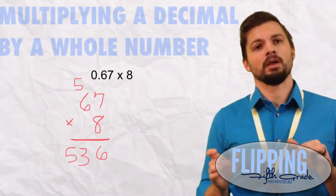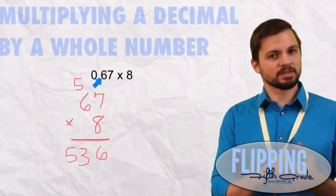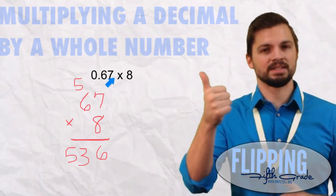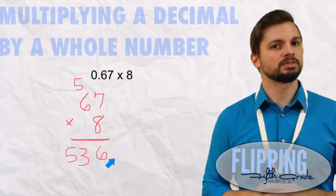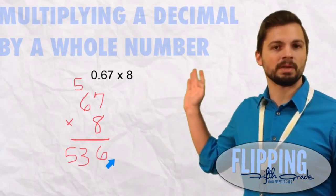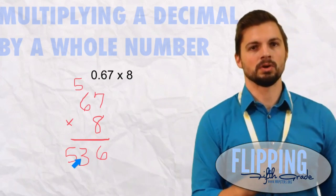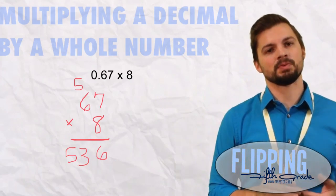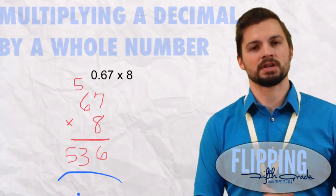Now we go to the top. We count our digits behind the decimal. In this problem we have 2, we have the 6 and the 7. Therefore in our answer we need 2. So let's start to the right and work left two spots. So start behind the 6, 1, 2. So we put our decimal between the 5 and the 3. So our answer is 5.36.